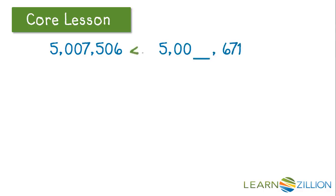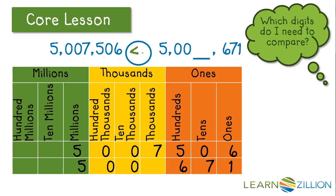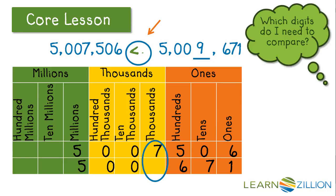Let's look at another number. Now we're comparing two numbers, but the digit in the thousands place is missing. We need to think about which digits we need to compare. Let's write those numbers on a place value chart. We always want to start with the digits that have the largest value. The millions are the same, the hundred thousands are the same, the ten thousands are the same. But when we get to the thousands, one digit is missing. To make this number sentence true, we have to pick a number that is greater than 7. We could pick an 8 or a 9. 5,007,506 is less than 5,009,671.